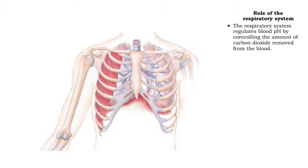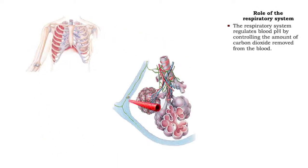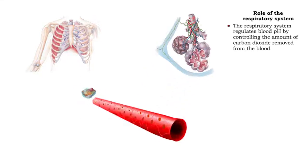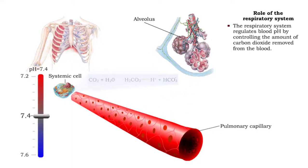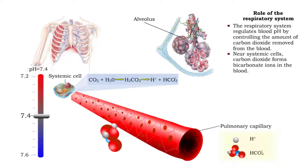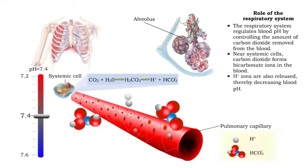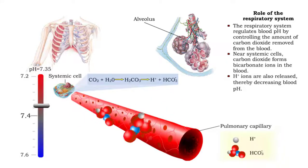The respiratory system can regulate blood pH by controlling the amount of carbon dioxide removed from the blood. Near systemic cells, carbon dioxide forms bicarbonate ions in the blood. Hydrogen ions are also released, thereby decreasing blood pH.